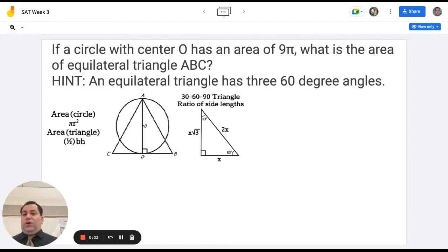Hello, and welcome to this video in which we are going to do the week three math SAT problem of the week. In the question, it says, if a circle with center O has an area of 9π, what is the area of the equilateral triangle ABC?